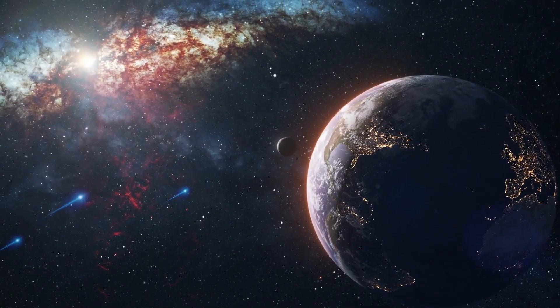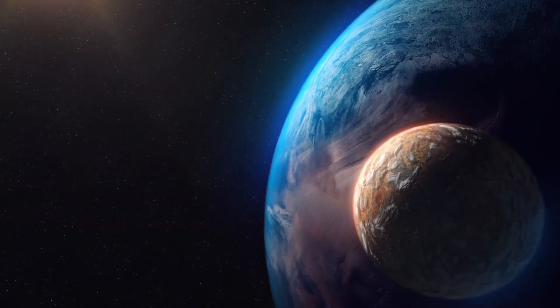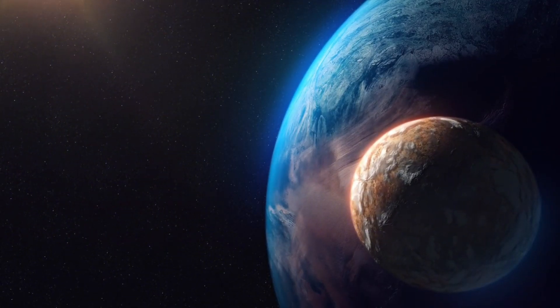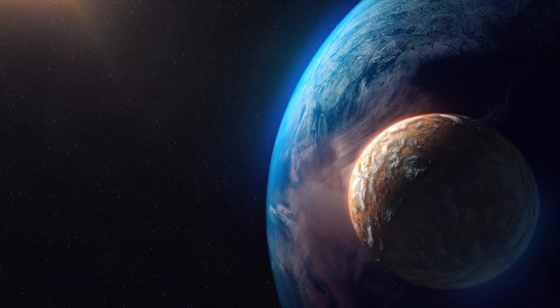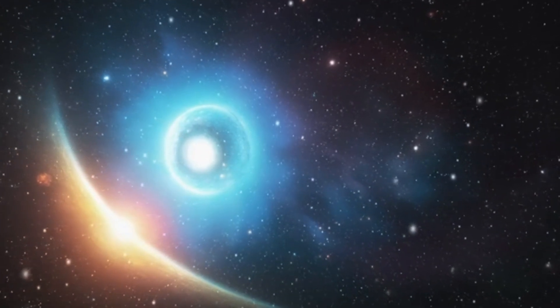There are also hot Jupiters, gas giants that orbit incredibly close to their host star. They exist in a scorching environment, with temperatures high enough to melt metal. Imagine being able to observe such a planet up close, with its raging storms and intense heat.